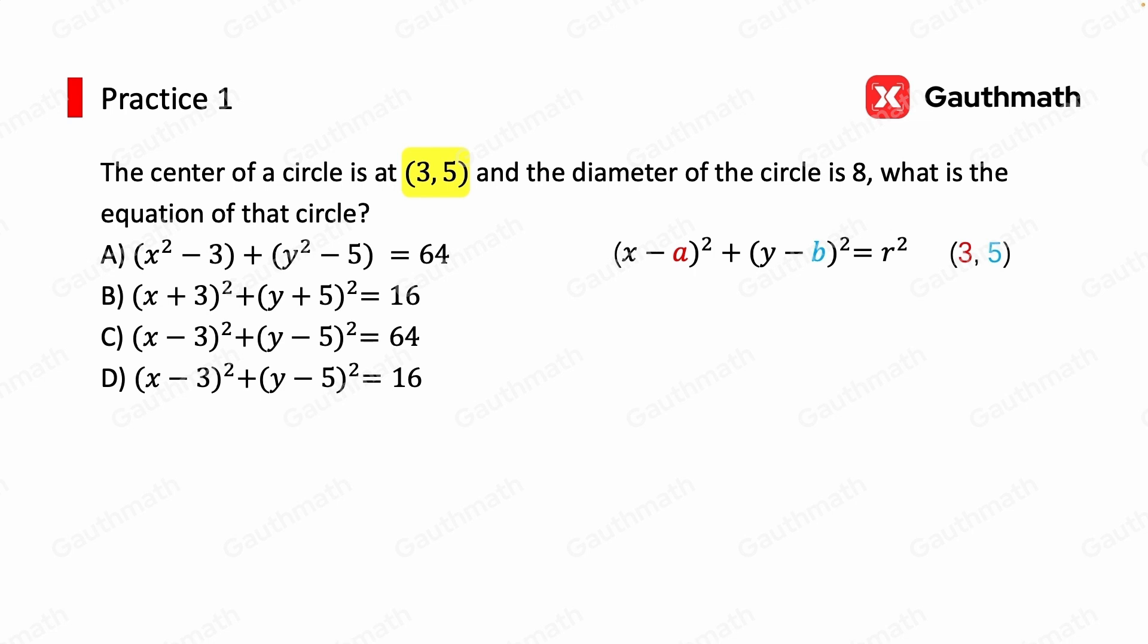We don't have any information about the radius yet. But what we do have is the diameter. By definition, we know that the diameter is twice the radius, thus radius must be diameter divided by 2, 8 divided by 2, which is 4.